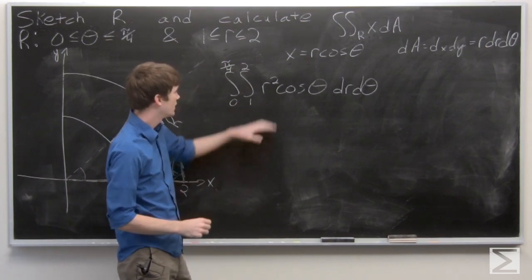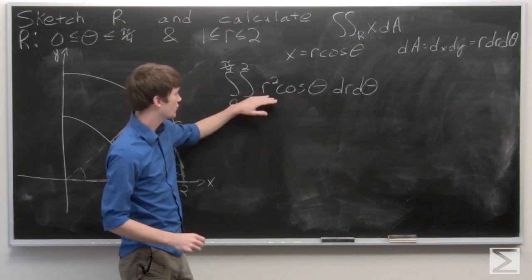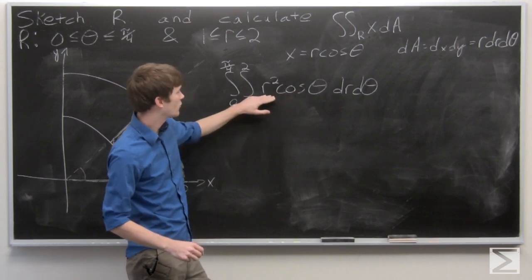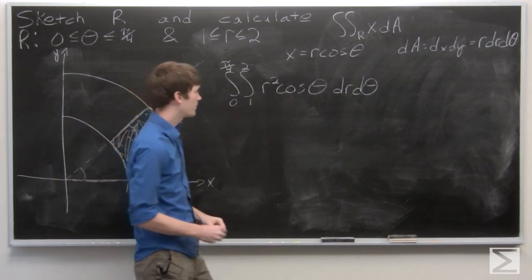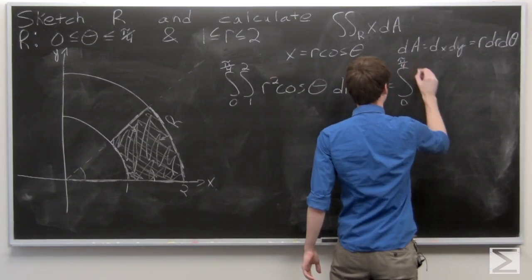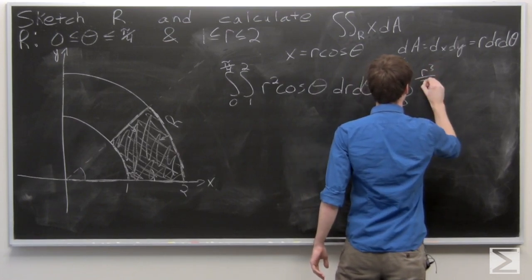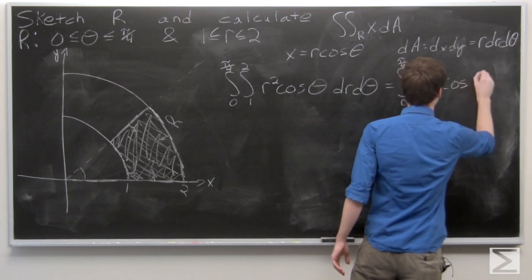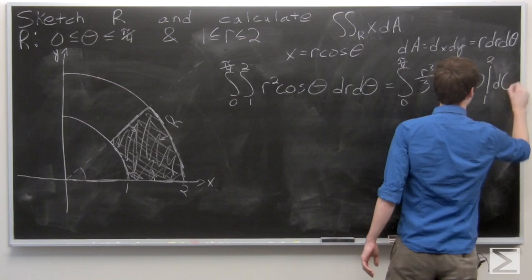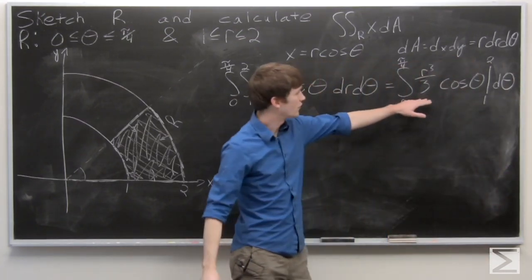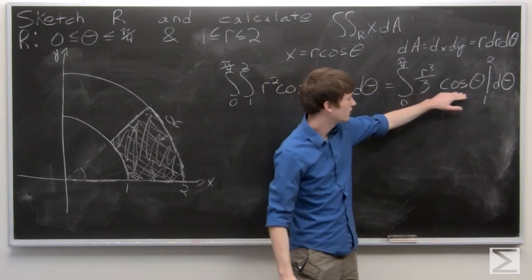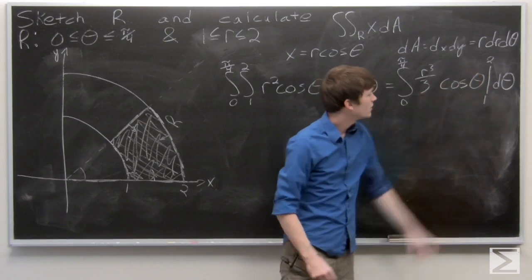We can go ahead and evaluate this. We're going to be integrating with respect to R first. So we'll hold cosine theta constant. The integral of R squared is R cubed over 3. So we get R cubed over 3 cosine theta, evaluated from 1 to 2, dθ.